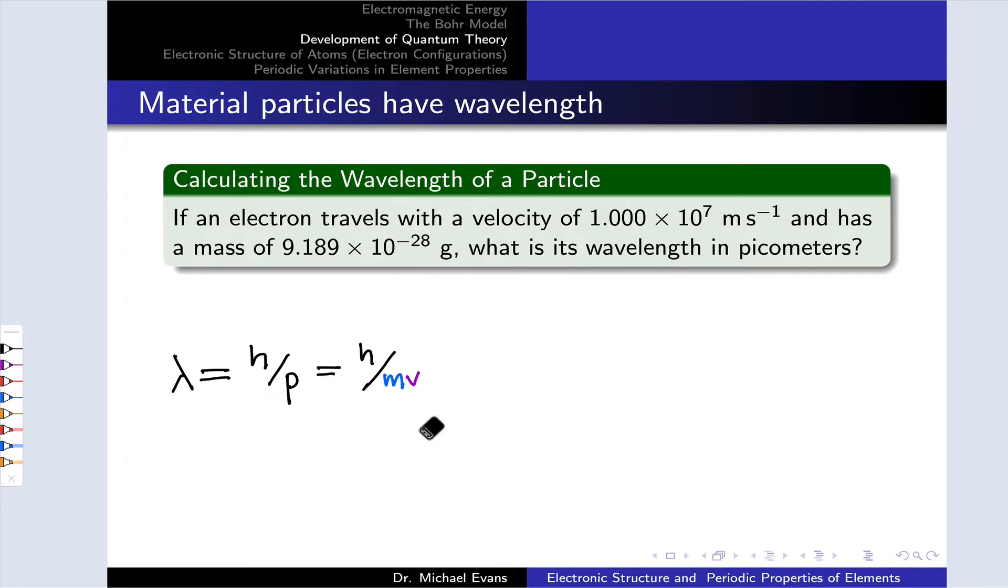These parameters come right out of the problem. The mass and velocity are there, as we see, and we can simply plug those in with Planck's constant in the numerator. Here I have it listed in joule seconds.